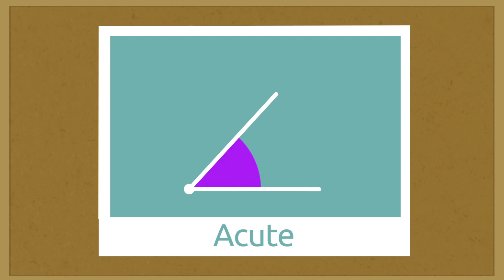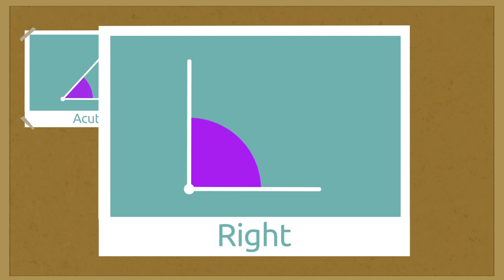Depending on the angle opening, angles can be acute—they measure less than 90 degrees. Right—they measure exactly 90 degrees. Obtuse—they measure between 90 and 180 degrees.